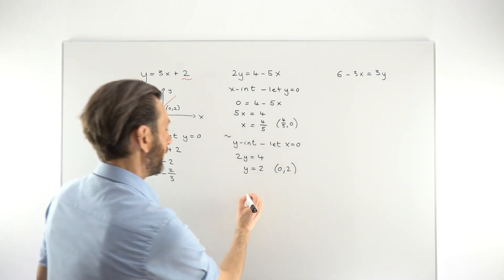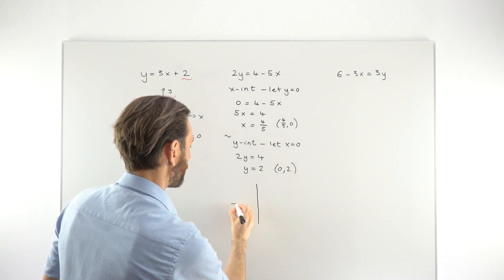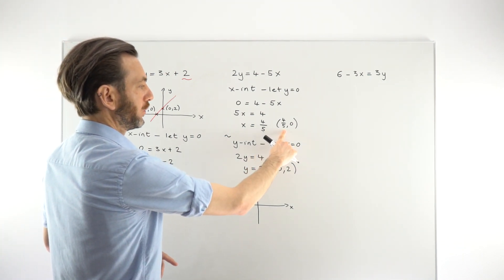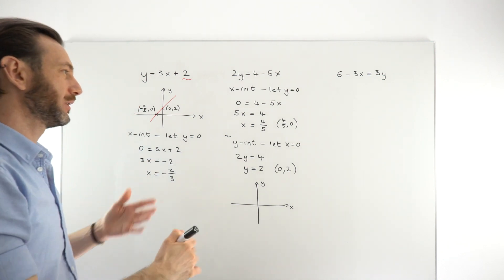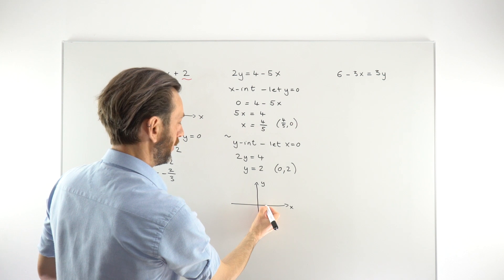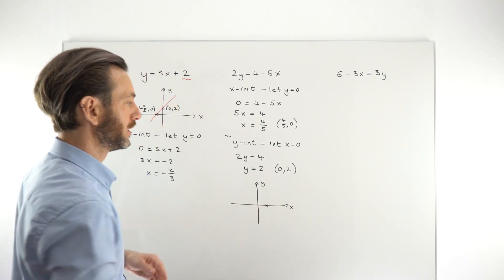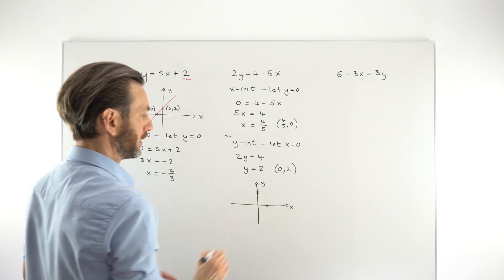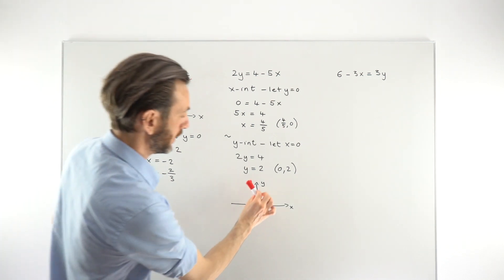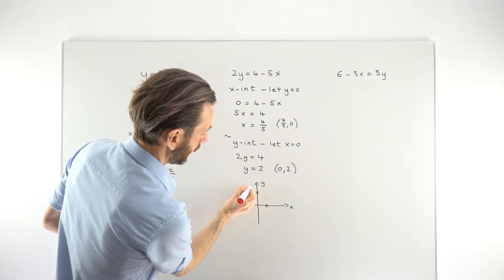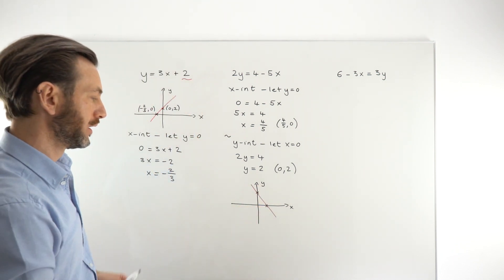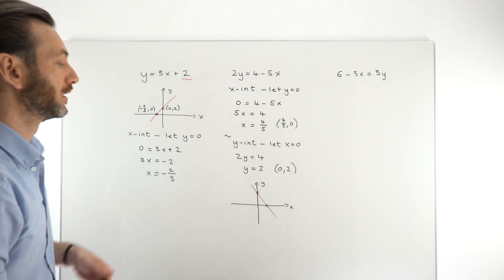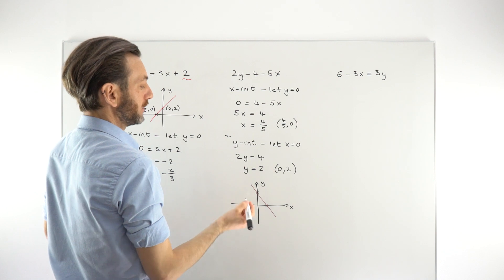We could quickly plot those two points to draw the line, since you only need two points for a straight line — and you can use the x and y-intercepts. The point (4/5, 0) is a little less than 1 along the x-axis, and (0, 2) is 2 up the y-axis. So the line slopes down to the right — a negative gradient, fairly steep, probably more than 45 degrees, which would be a gradient of more than minus 1, so around minus 2 or minus 3.